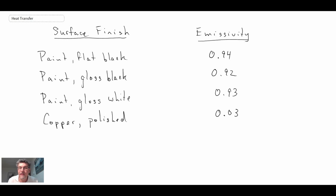So there we have the emissivities for the different surfaces. And you can see for all of the painted surfaces that we looked at, the emissivities are all pretty close. 0.93, 0.92, 0.94.